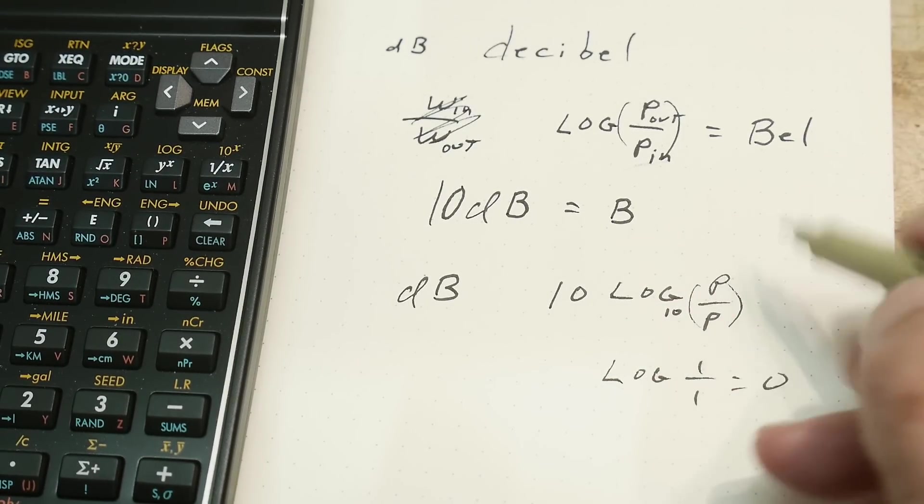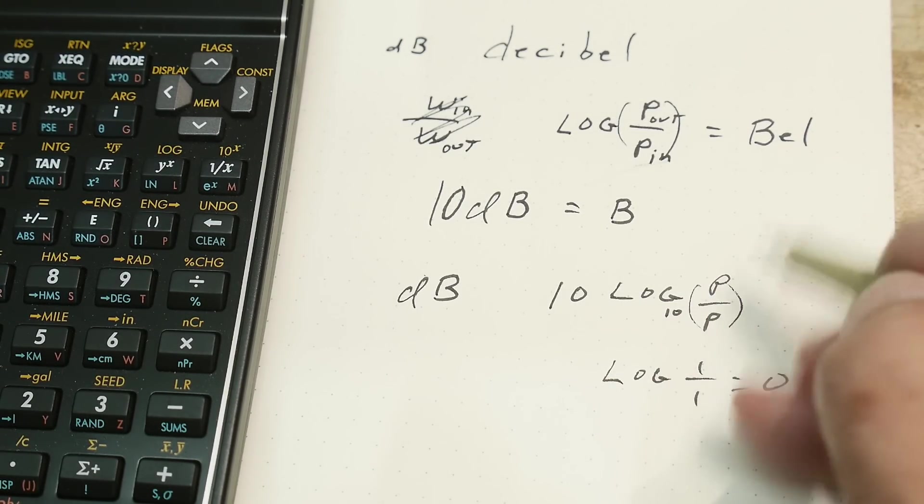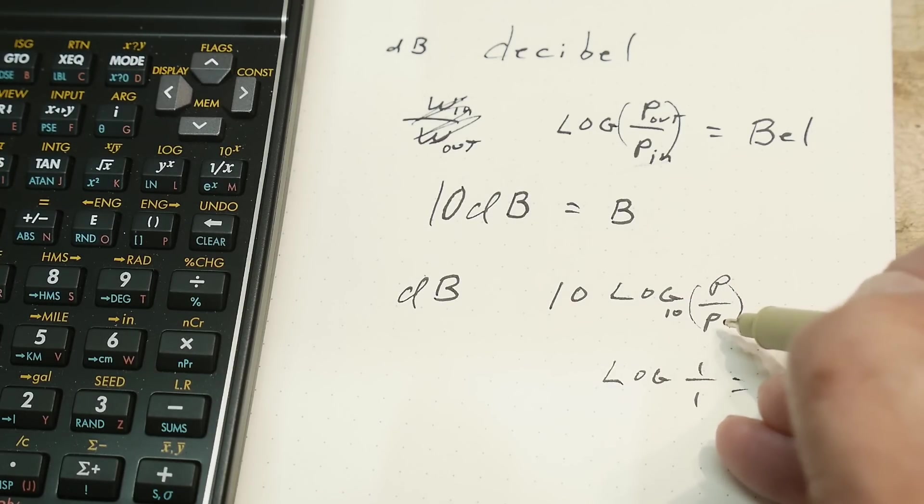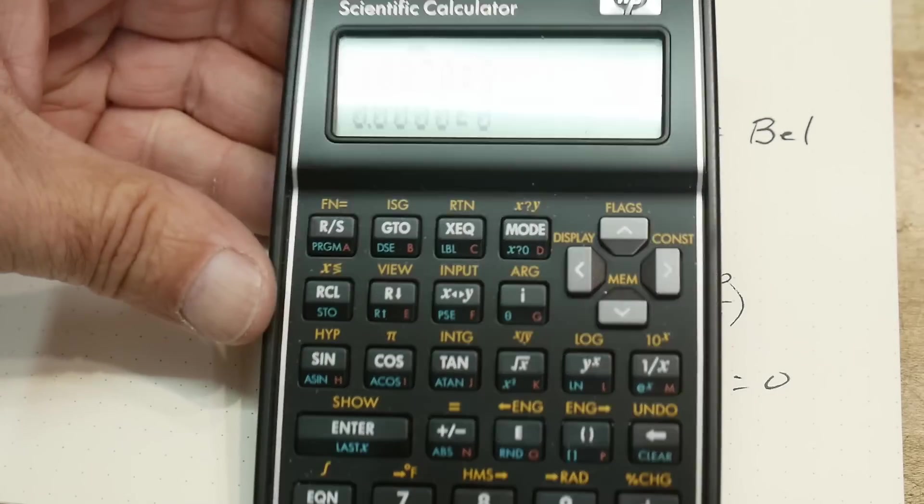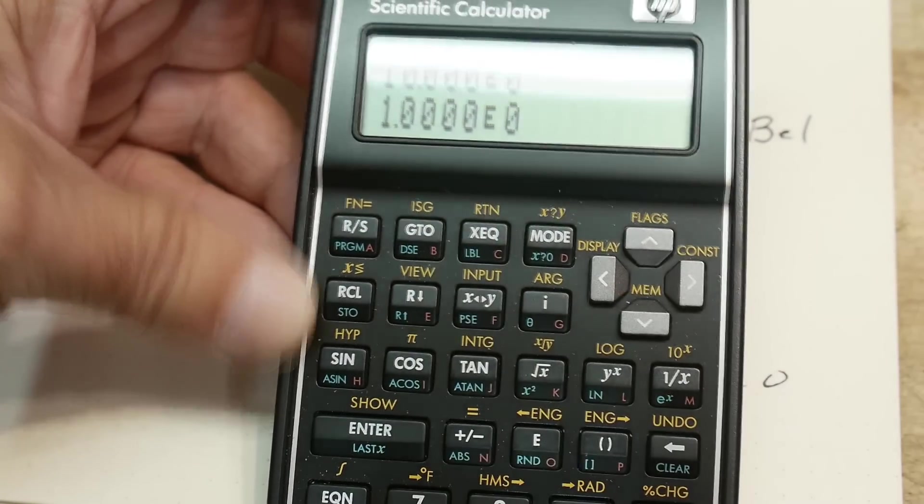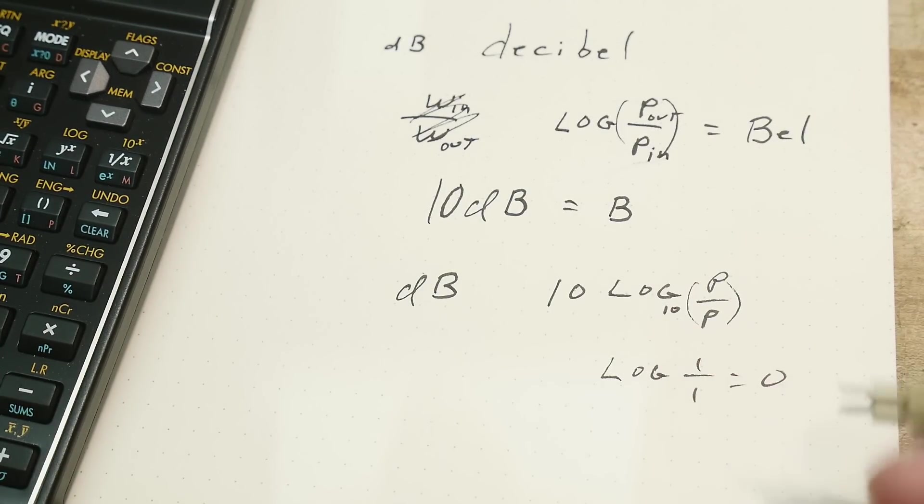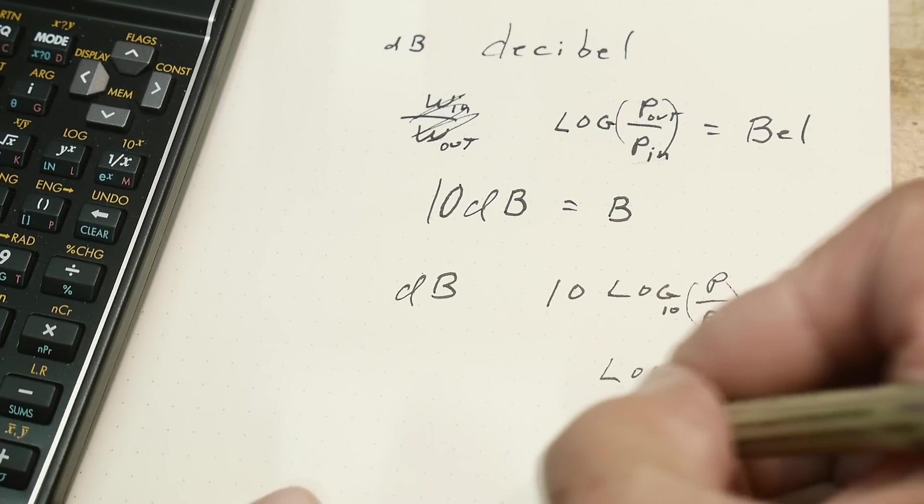So 0 dB is no gain. If you have 10 times the power output, 10 watts out and one watt in, you have a logarithm of 10. The logarithm of 10 is 1, times 10 is 10, so 10 dB.